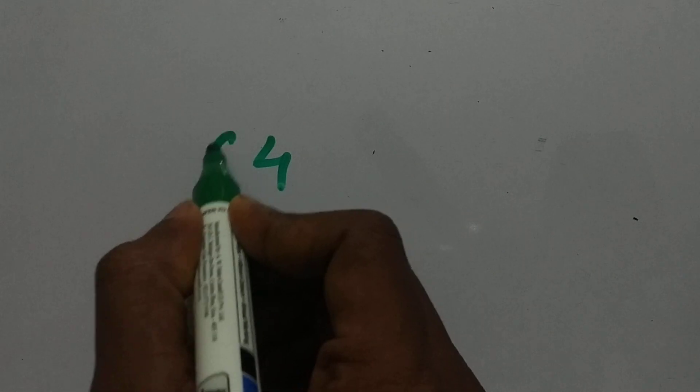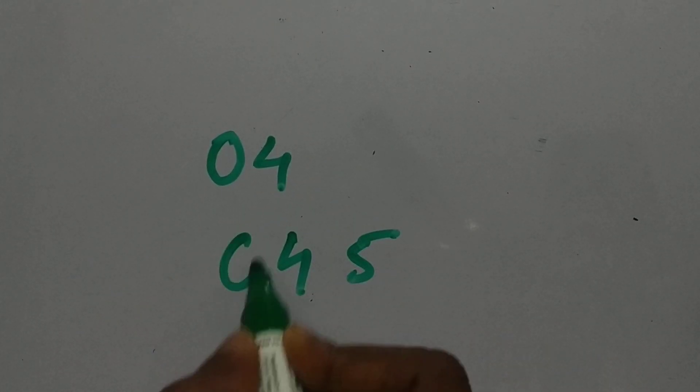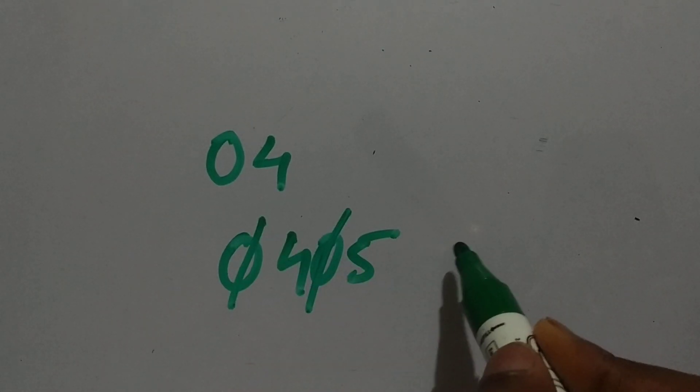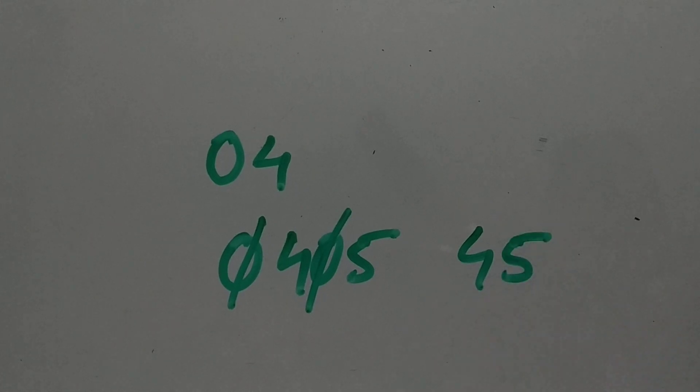In unpacked, if we take 4 as a digit, we need to add extra zeros. If we take 45, we need to store it as 0000 0100 0000 0101. But in packed, we are removing these zeros and storing it in a single byte. I hope you understand now.